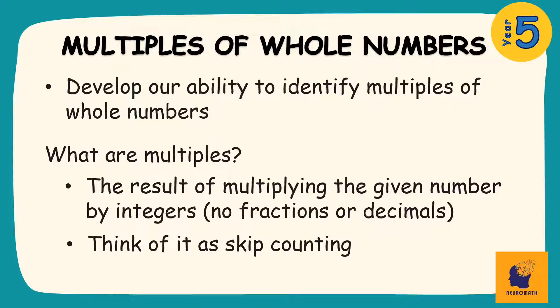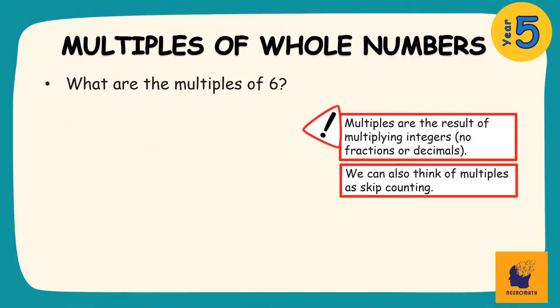To better understand this let's start with the multiples of 6. Now if I multiply 6 with the integer of 1 I get 6 which is the first positive multiple of 6. Now let's multiply it by 2 which is 12 then 3 which is 18. As you can see this is turning into skip counting.